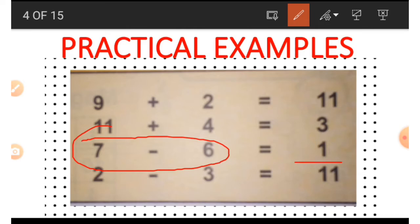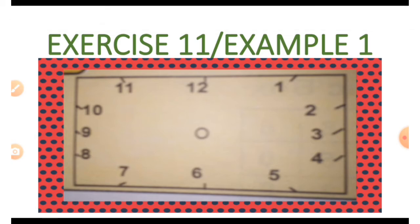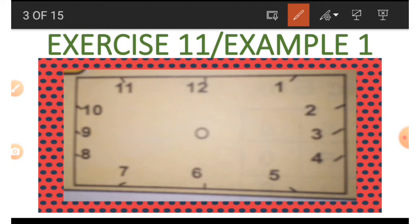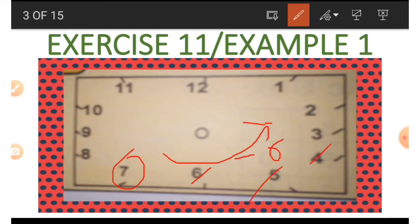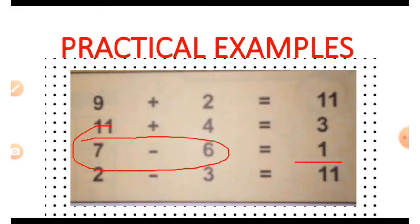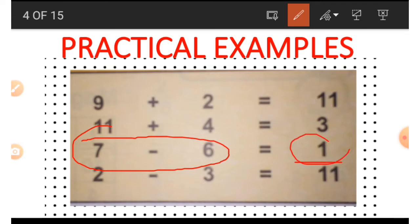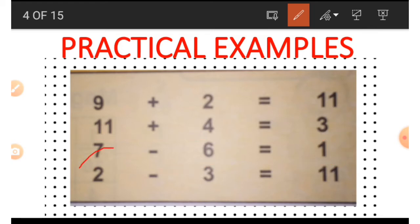Now let's look at subtraction. The third example is 7 minus 6, which gives us 1. We start with the first number, 7, as our starting point. Because it's minus we move in the opposite direction — anti-clockwise. Minus 6 means we count 6 steps from 7: 6, 5, 4, 3, 2, 1. The answer is 1. The fourth example is 2 minus 3, where 3 is bigger than 2.